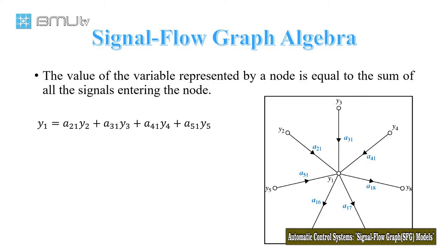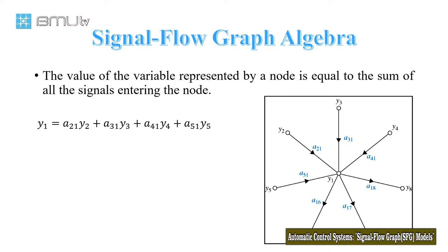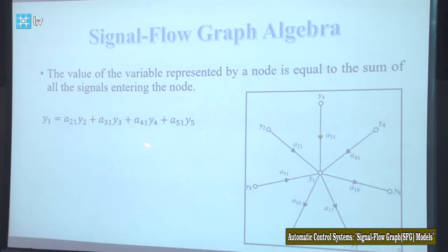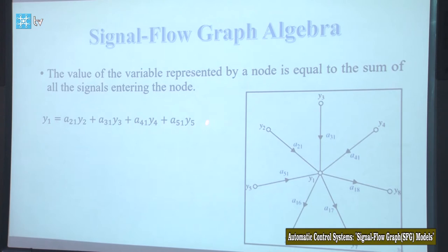So we can write: y1 = a21 × y2 + a31 × y3 + a41 × y4 + a51 × y5. We can find the value of this node using this equation — it is the sum of all signals entering the node.